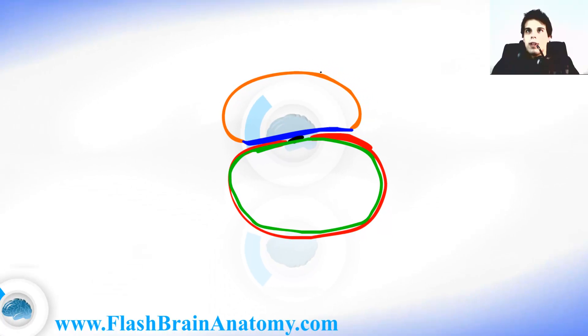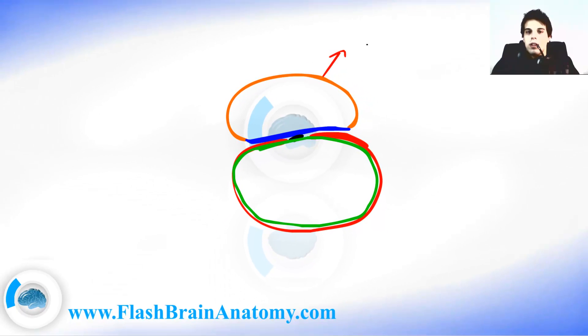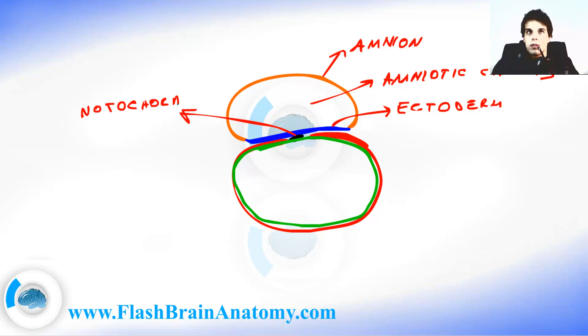Let me just write this all down. This was the amnion. This was the amniotic cavity. This over here, this blue thing, was ectoderm. This dark thing in the center was the notochord. This was the mesoderm, and this over here inside was the endoderm.